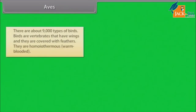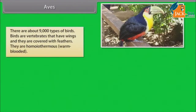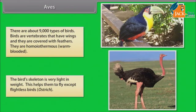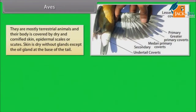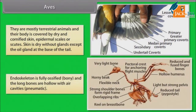There are about 9,000 types of birds. Birds are vertebrates that have wings and they are covered with feathers. They are homeothermous or warm-blooded. The bird's skeleton is very light in weight, which helps them to fly, except flightless birds such as Ostrich. Skin is dry without glands except the oil gland at the base of the tail. Endoskeleton is fully ossified, that is bony, and the long bones are hollow with air cavities — pneumatic.